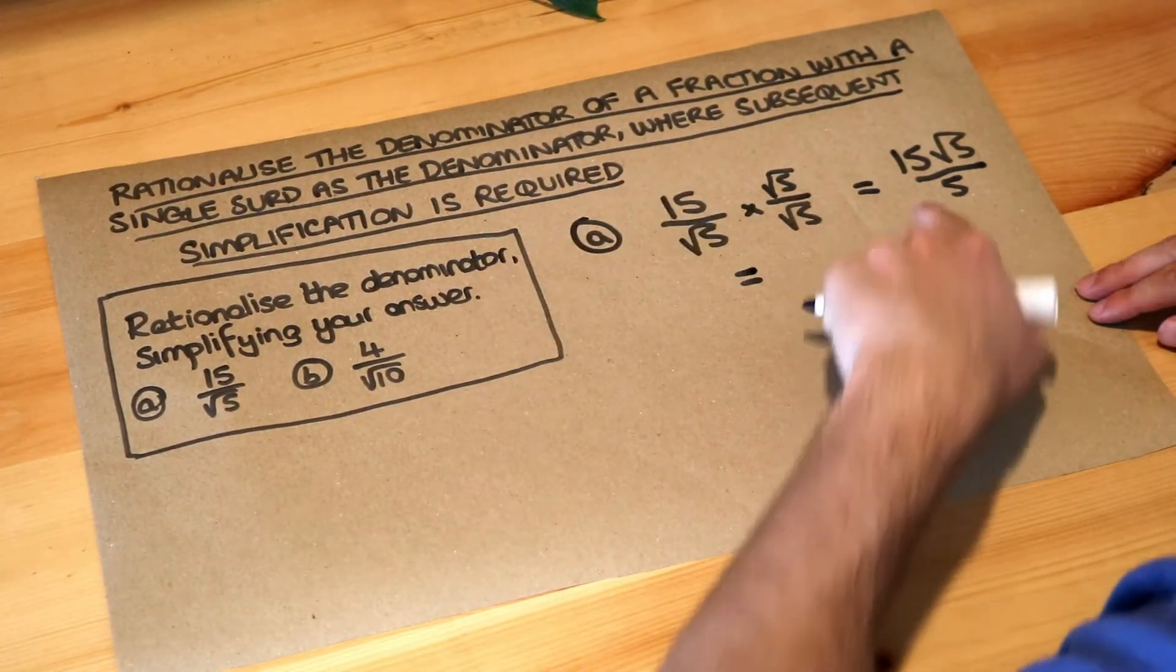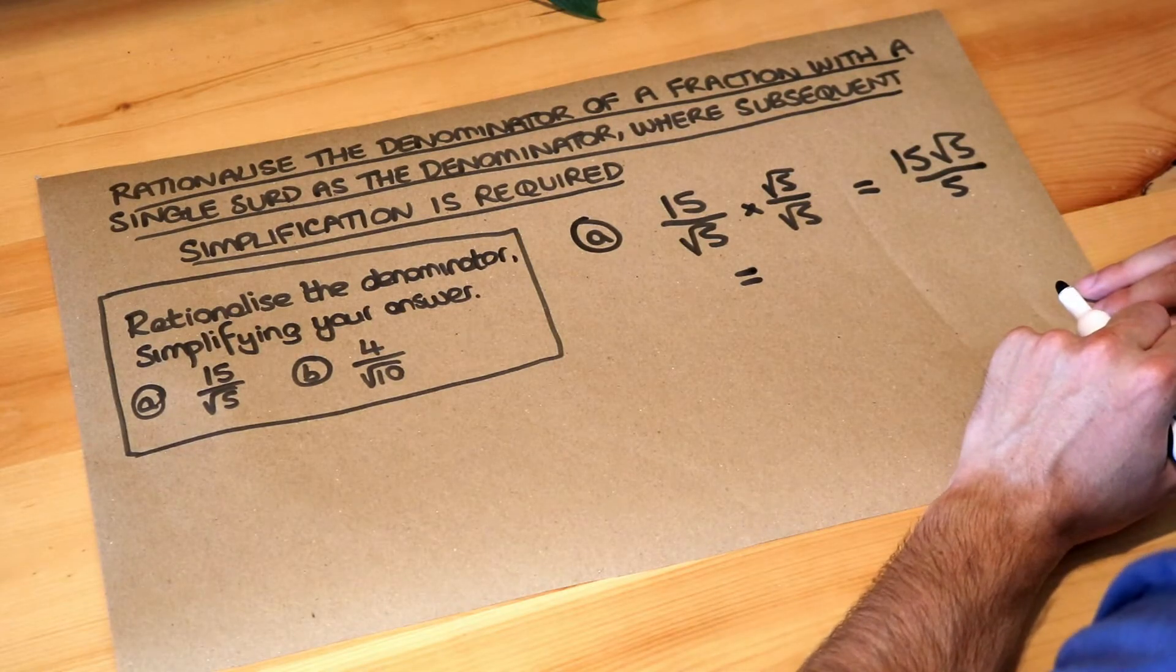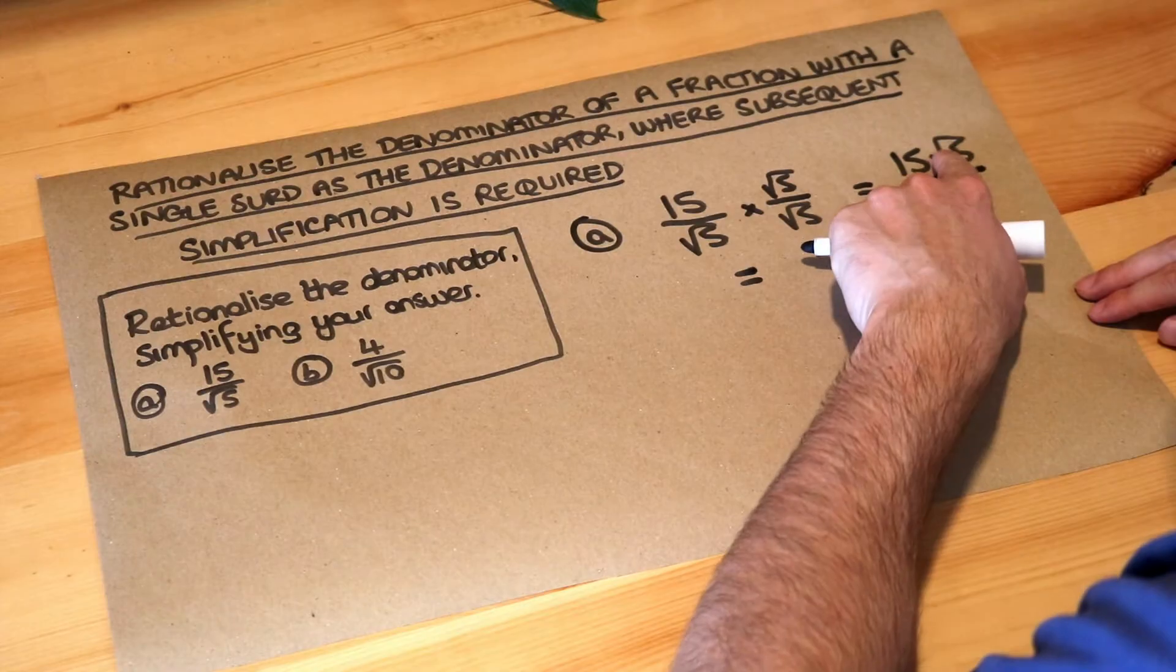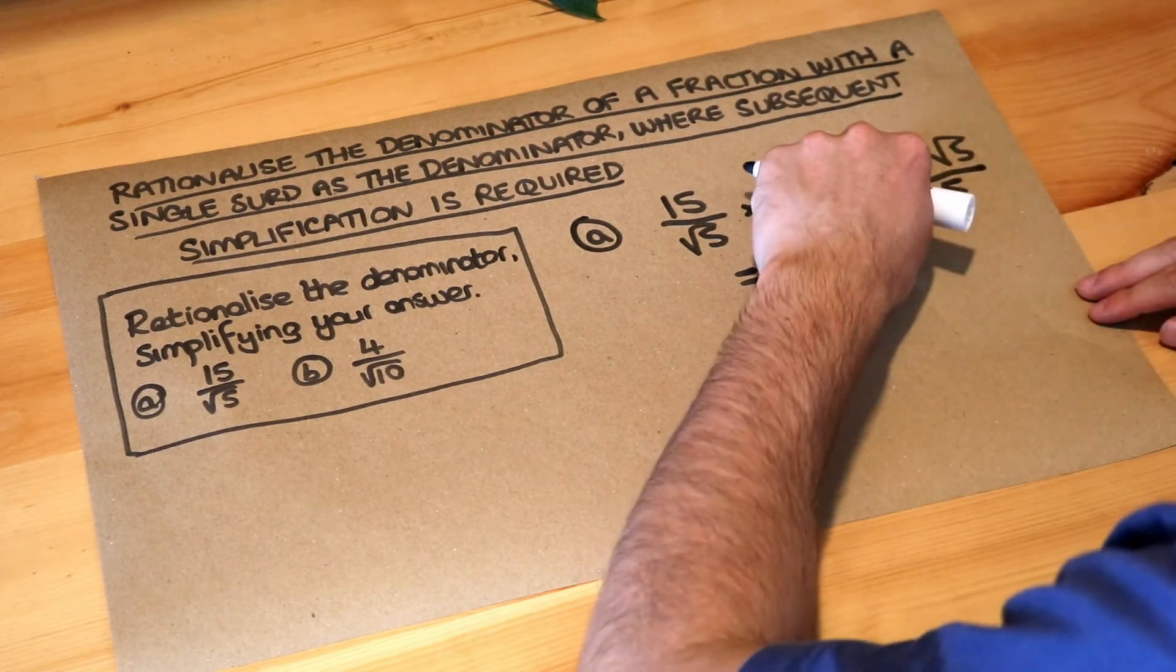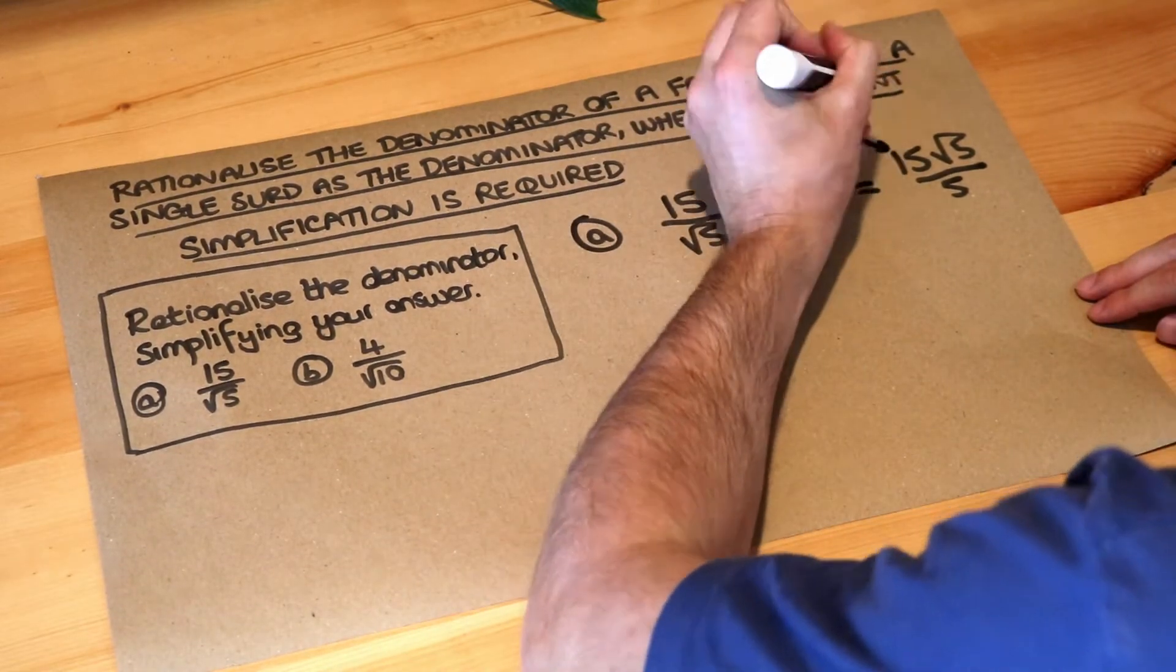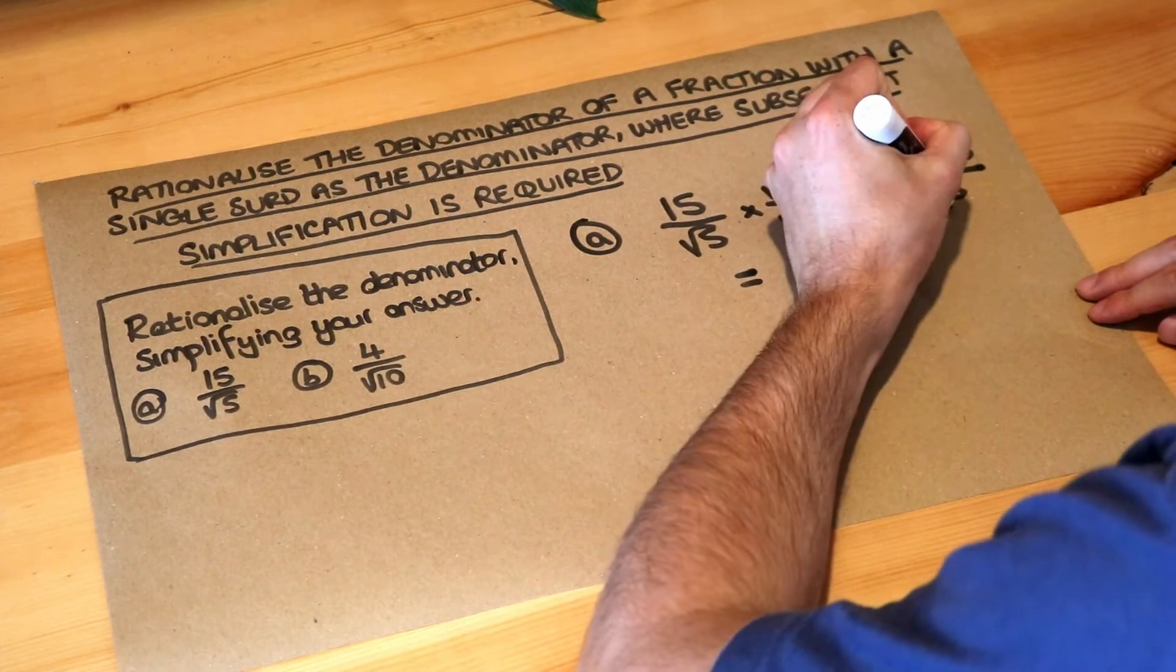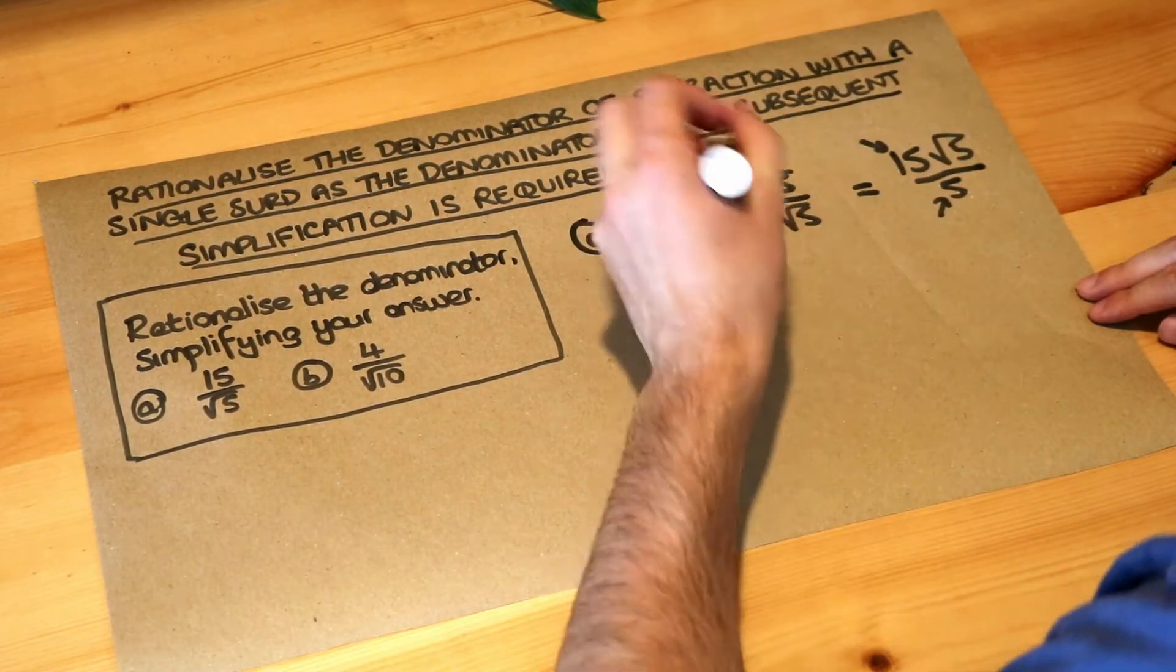What we have in this question is that this fraction will subsequently simplify. Now let's think, we're dividing 15 lots of root 5 by 5. When we divide surds or non-surds, you can divide the non-surds. So here the 15 is a non-surd, it doesn't have a root in it. And the 5 is a non-surd, it doesn't have a root in it. 15 divided by 5 is 3.